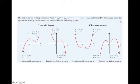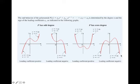For even-degree polynomials, both ends go in the same direction — either both up or both down. If you have a positive coefficient, they're both going up; it's like the graph is smiling at you. It may have a wiggle in the middle, but it's still smiling. If you have a negative coefficient, it's like it's frowning at you — it may have a wiggle in the middle, but it is frowning.